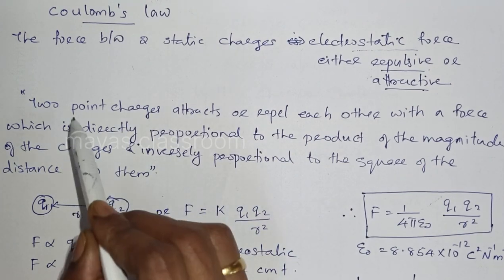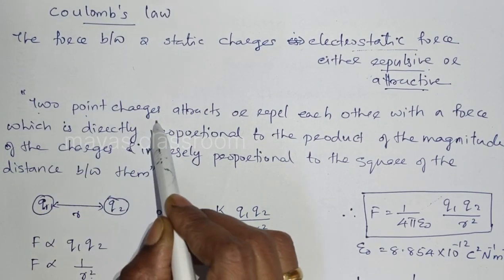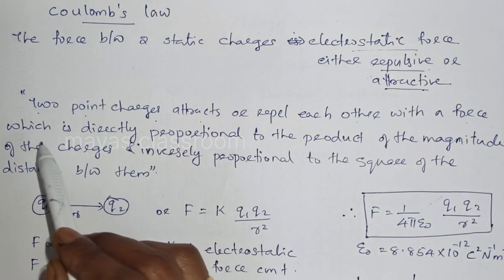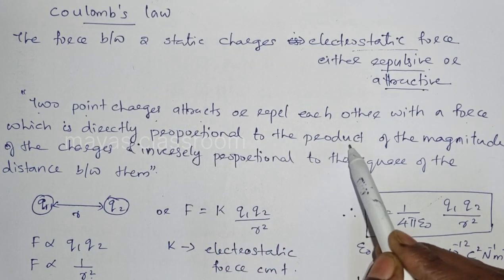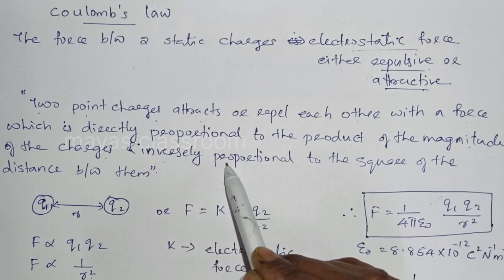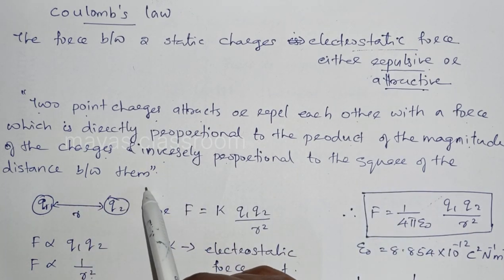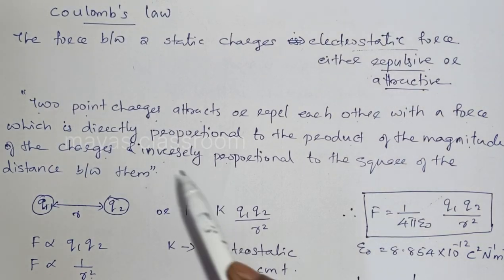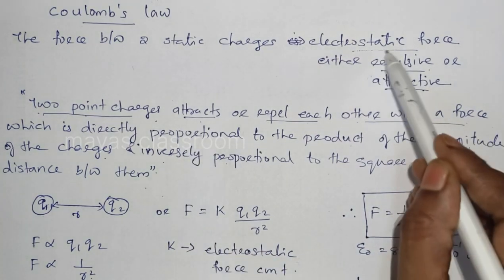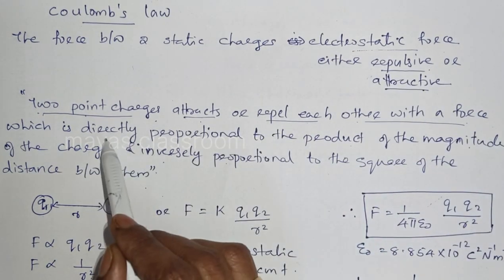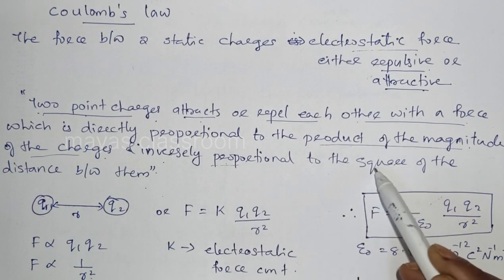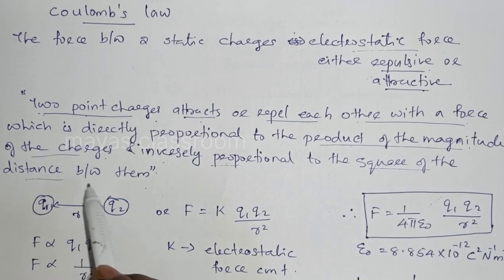Two point charges attract or repel each other with a force which is directly proportional to the product of the magnitude of the charges and inversely proportional to the square of the distance between them. That force is the electrostatic force.